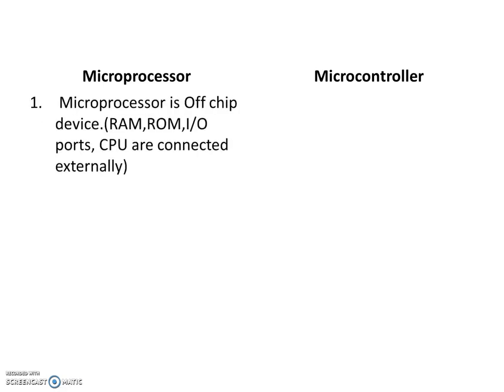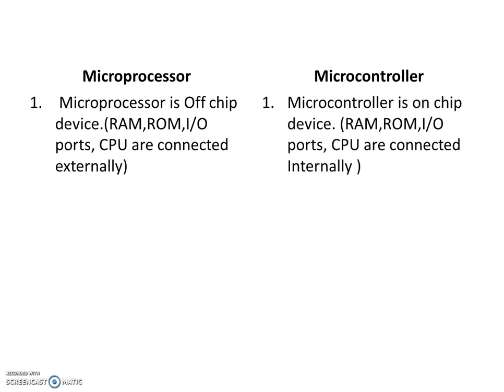First, microprocessor is the off-chip device and microcontroller is the on-chip device. Off-chip device means RAM, ROM, input, output, power, and CPU are connected external to the chip. And for microcontroller, these components like RAM, ROM, input, output, power, and CPU are connected on the chip. So it is called an on-chip device.